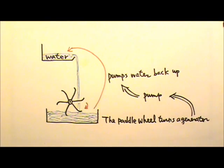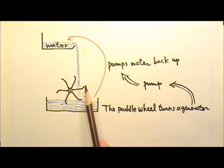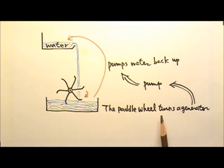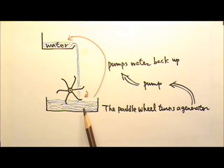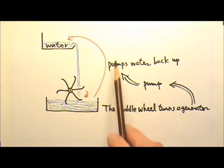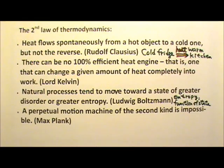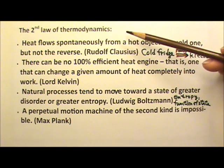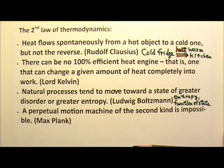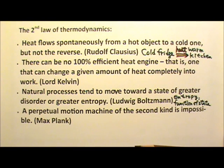It also violates the second law, because friction, air resistance, and resistance in the electric circuits produce heat, and according to the second law, not 100% of this heat can be converted into mechanical work to pump all the water back up. For this course, you need to be able to recognize that these are all equivalent statements of the second law.